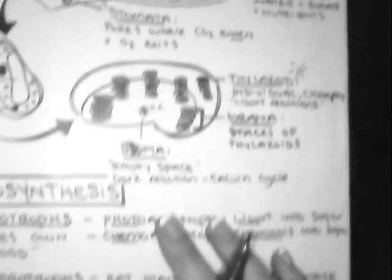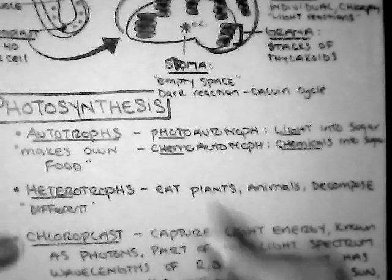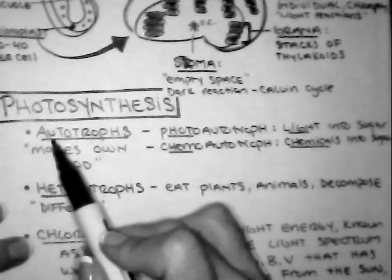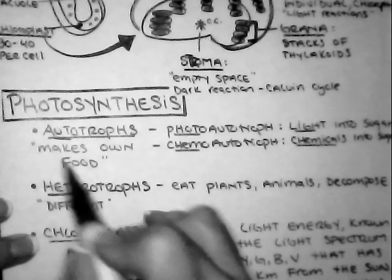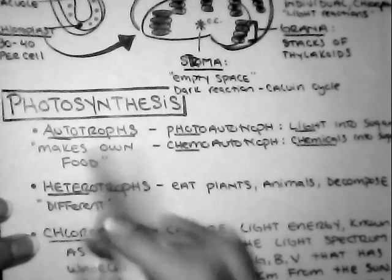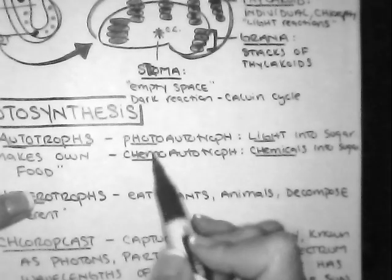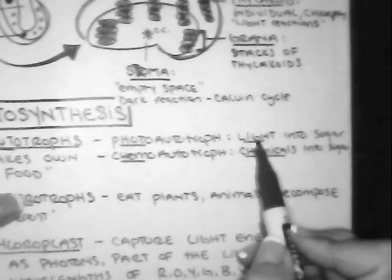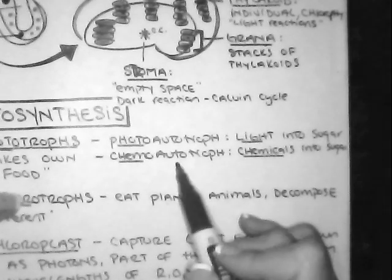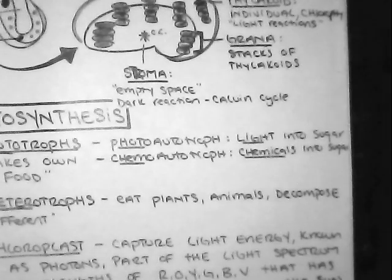Before we begin the process of photosynthesis, let's talk about key words. During photosynthesis, we have a couple terms. Autotrophs - auto means automatic, or anything making their own food. There are two types of autotrophs: photo and chemo. Photo autotrophs are organisms that use photosynthesis to change light into sugar. Chemo autotrophs use chemicals and change them into sugar.